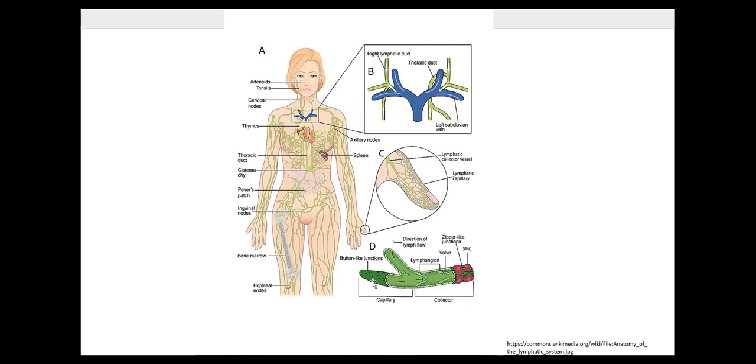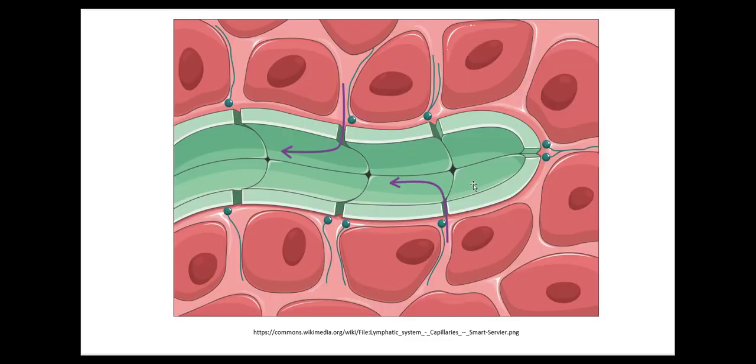Here is a lymphatic vessel, and let's take a close-up of that. What we see here is the interstitial fluid coming out of the circulatory system and moving through these little one-way valves into the lymphatic vessel. As the fluid flows through the lymphatic vessels, we see they contain one-way valves, just like the venous system. So they rely on external pressure like muscular contraction.